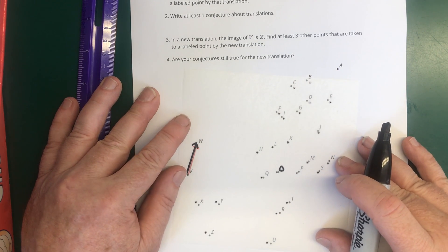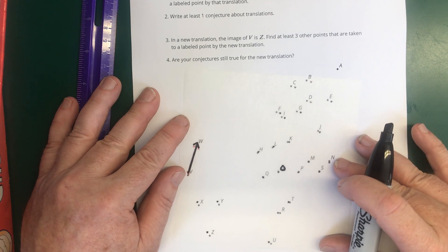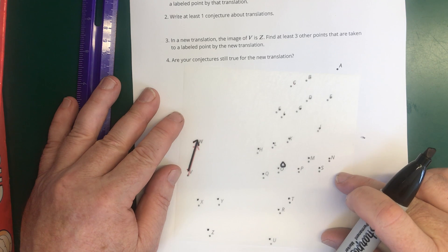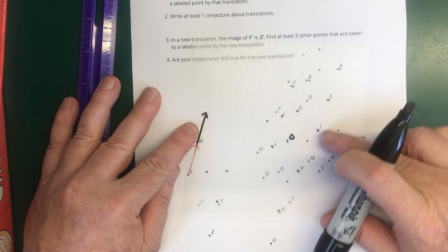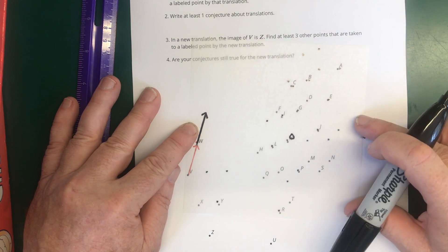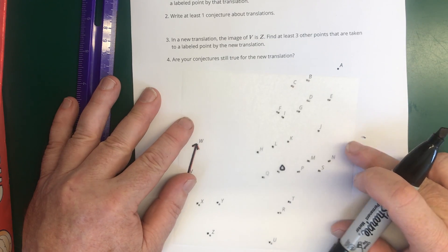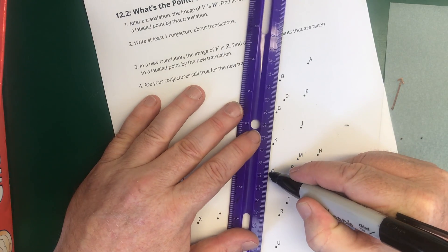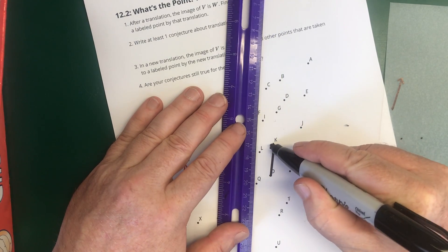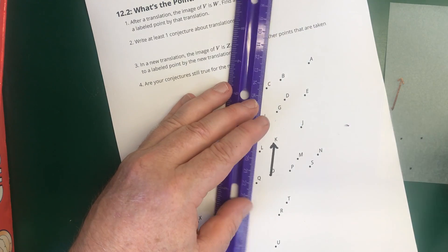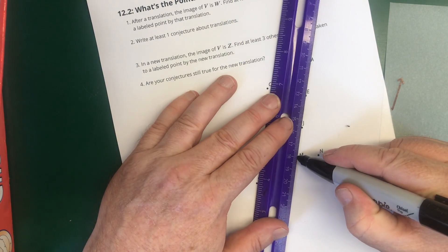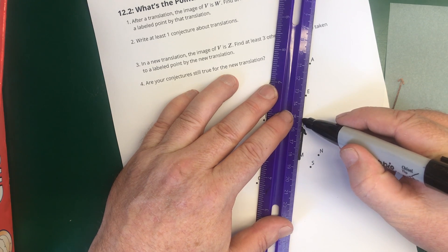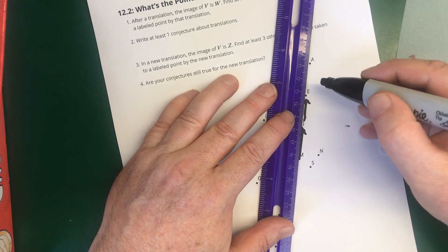And let's see if we can find another one. Looks like maybe M, which is right here. M moves up to J. At the same time, J moved up to E. E moved up to A.